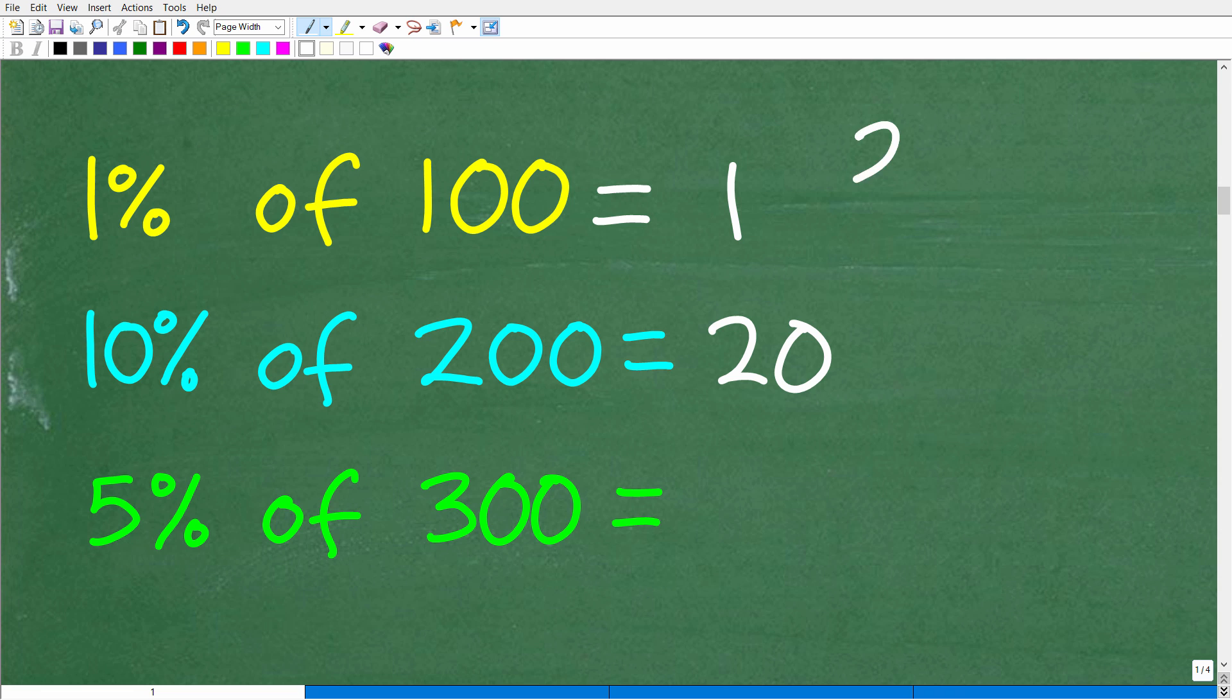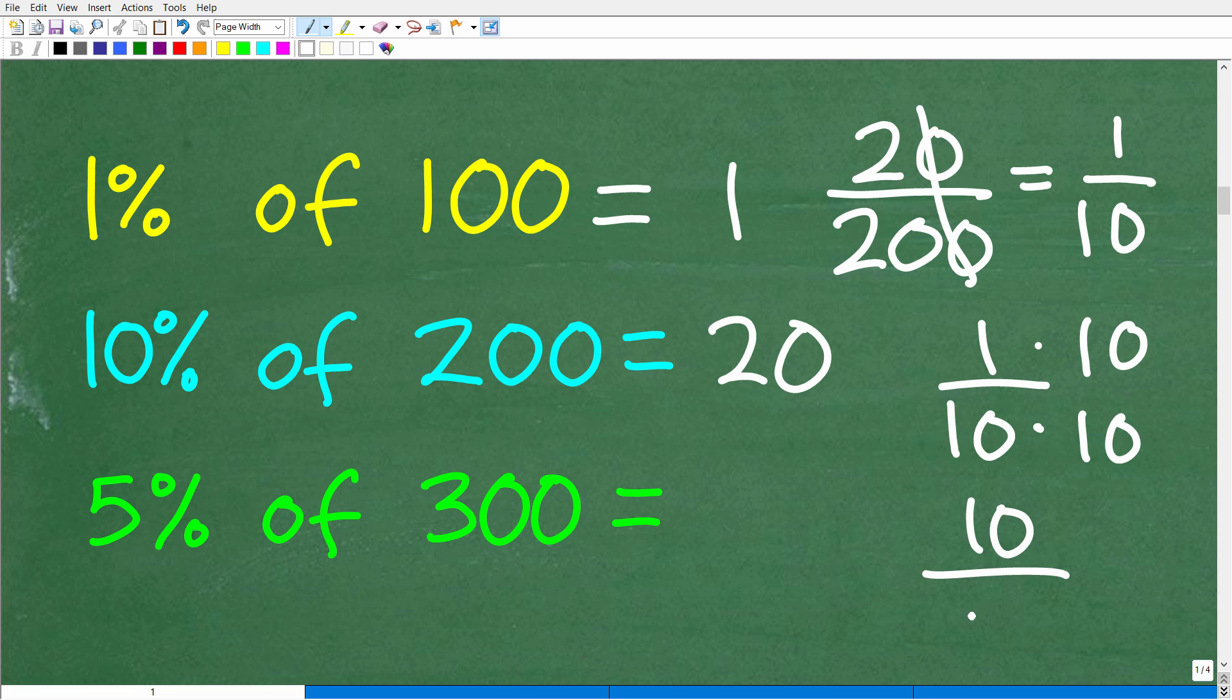Now we can compare this right here, 20 over 200, and let's reduce this fraction. So 20 over 200 is 2 over 20. And 2 goes into 20, 10. So this is 1 over 10. And so the fraction 1 over 10, if I multiply both the numerator and denominator by 10, I'm going to have 10 over 100. I'm comparing a number to a fraction where the denominator is 100. So this is 10%. So 10% of 200 is 20.